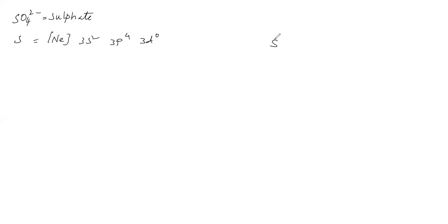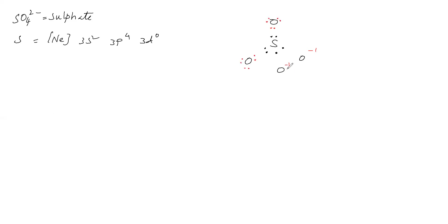In SO₄²⁻, sulfur's valence shell has 6 electrons and there are 4 oxygen atoms. The minus 2 charge is distributed as minus 1 to one oxygen and minus 1 to another oxygen. The two neutral oxygens have 6 electrons each in their valence shells; the two O⁻ ions have 7 electrons each.